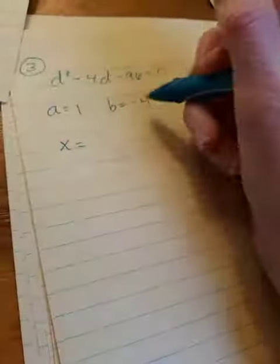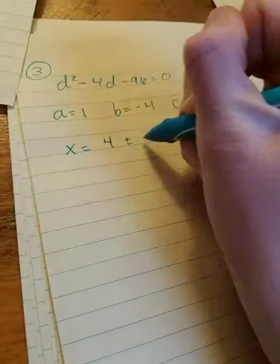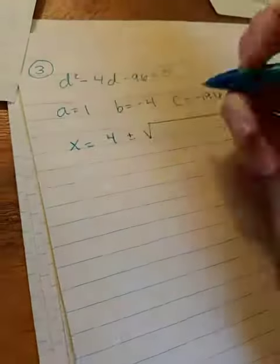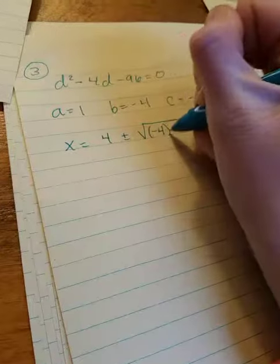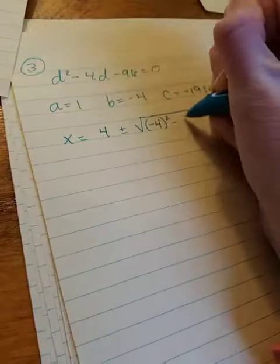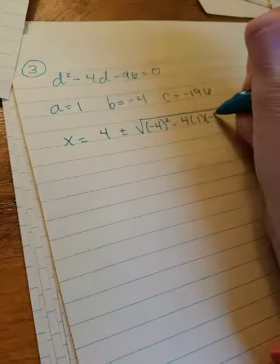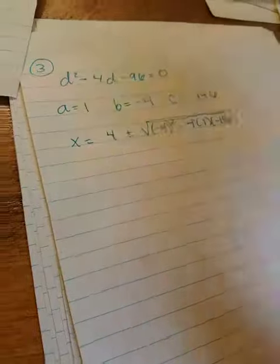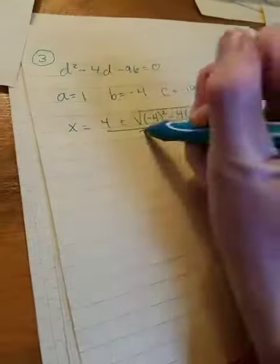So using the quadratic formula, negative B, so it's going to be positive 4, plus or minus the square root of quantity negative 4 squared, minus 4 times A times C, all over 2A.